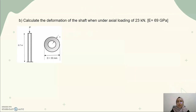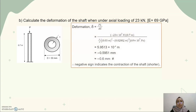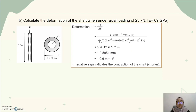For question 1B, we calculate the deformation of the shaft when under axial loading of 23 kN, given that the Young's modulus is equal to 69 GPa. Simply by using the deformation formula, which is PL divided by AE, we can find the deformation. We substitute P, which is 23 kN — negative here indicates the direction of the loading — the length of the shaft is 0.7 m, the area uses the same equation as in 1A, and we multiply by E. We get the deformation equal to negative 0.5951 mm, or approximately negative 0.6 mm.